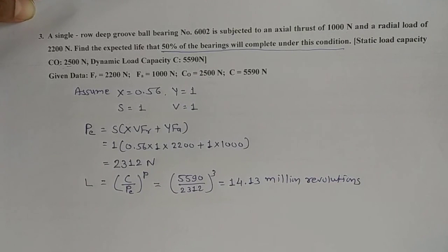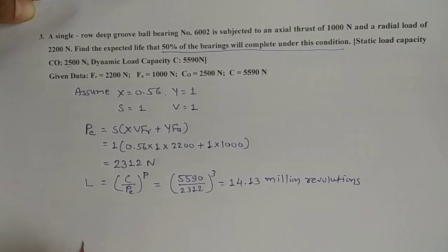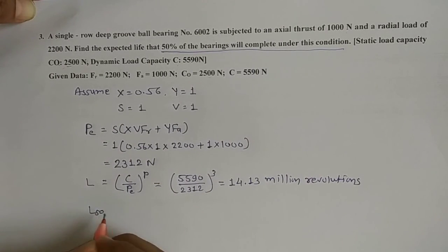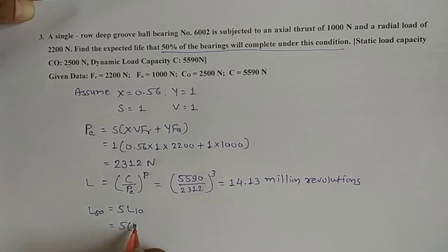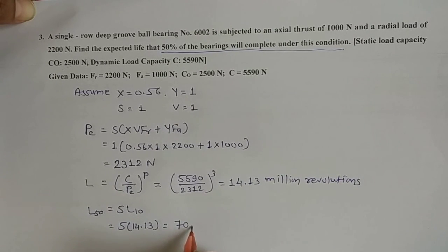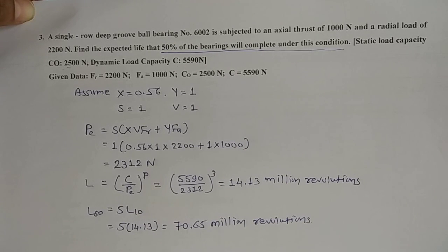Now let us find the life that 50% of bearings will complete. L50 = 5 × L10 = 5 × 14.13. Therefore L50 life is equal to 70.65 million revolutions. This is our answer.